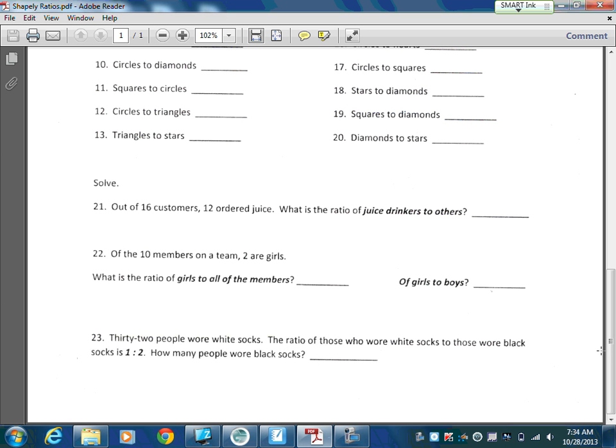So if you look at 21, 21 says out of 16 customers, 12 ordered juice. What is the ratio of juice drinkers to others? Okay, so we have 16 customers, 12 ordered juice. So the first thing I always do is write down what's important, all my information. 16 customers, we could have shortened that a little bit, we don't need to write all those words out, but 16 customers and then 12 ordered juice.